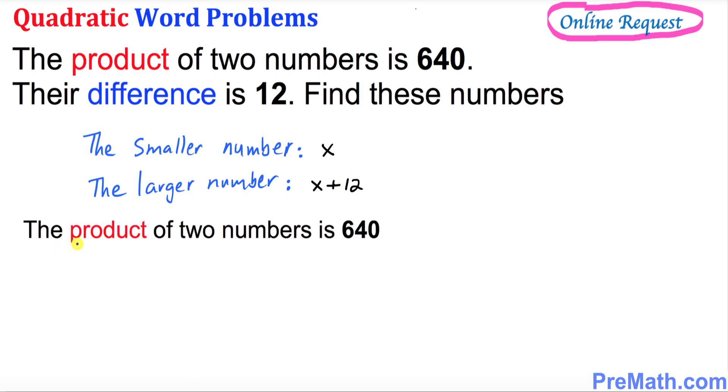And moreover, we know that the product of these two numbers is 640. Product means we need to multiply these two numbers. So let's go ahead and multiply: x times (x plus 12) equals 640.